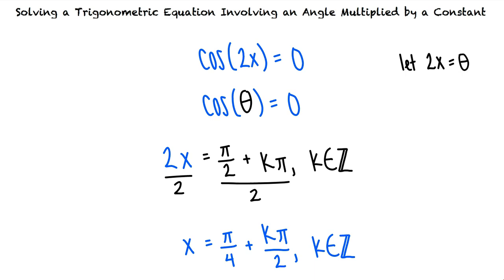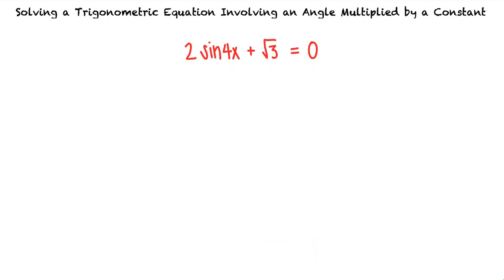Let's try one more example: 2 sine 4x plus square root 3 equals 0. This one looks more complicated than the last one. Do we solve it the same way?